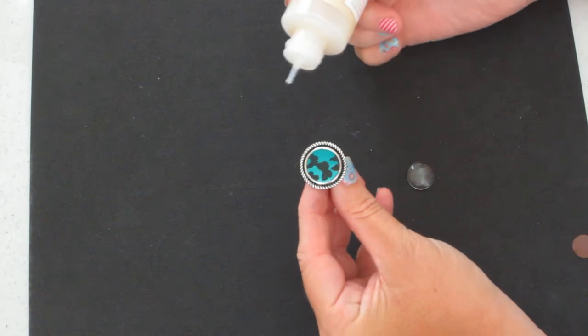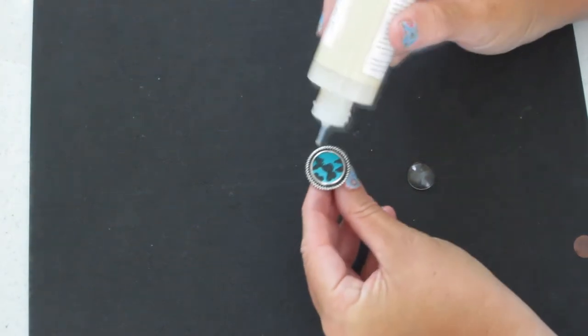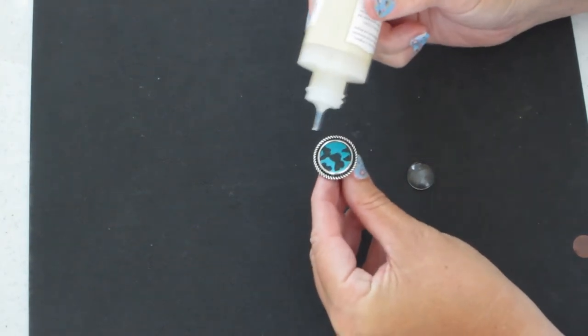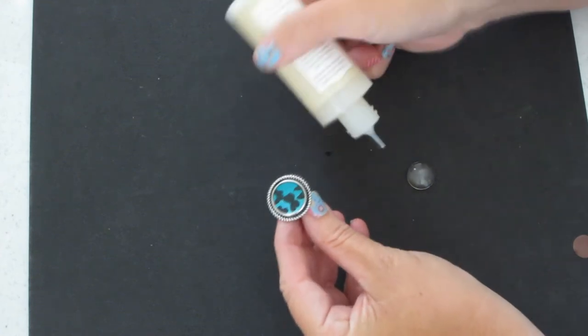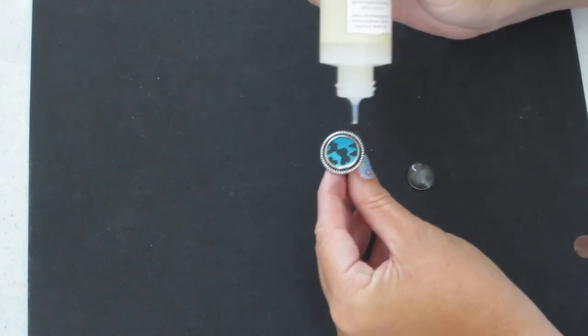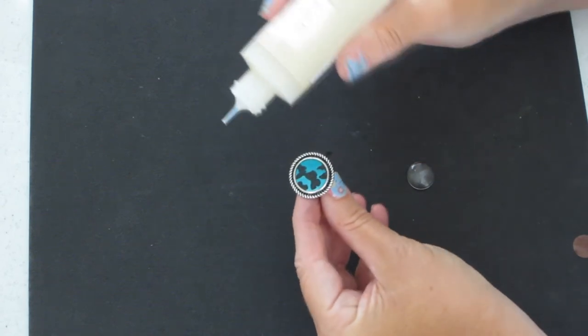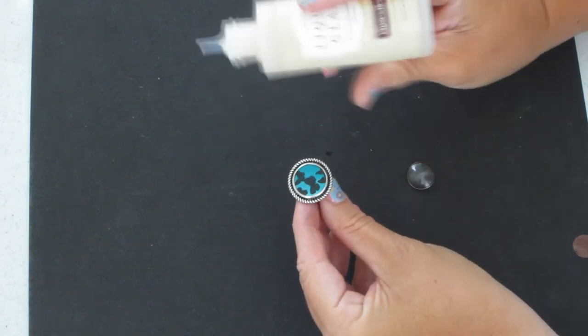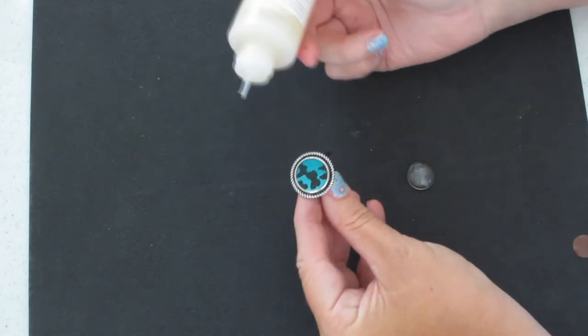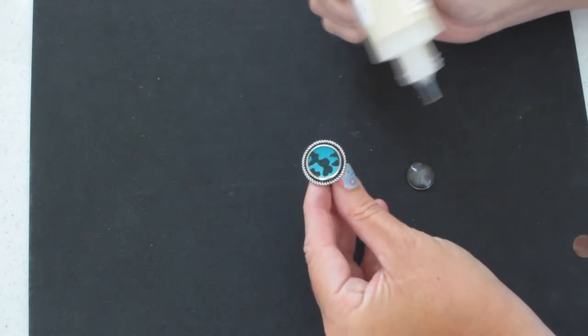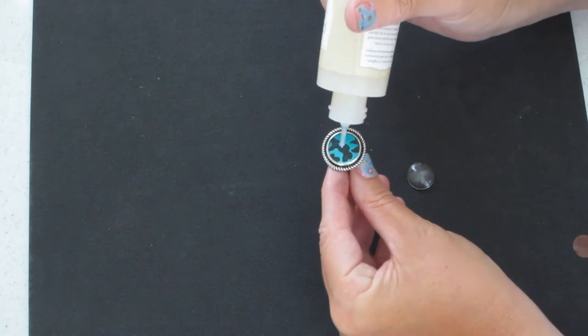Craft Fantastic sells a clear adhesive that they have special formulated for their jewelry, but I didn't get that. So what I'm using, and it works just as well I think, I'm using liquid glass. This is by Close to My Heart, but it's just like glossy accents or crystal lacquer. It's just a super clear adhesive.